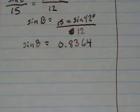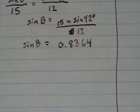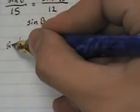And of course, now I don't want sine B. I want B. So I want to get rid of sine. I do that by taking the inverse sine of both sides.